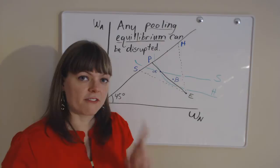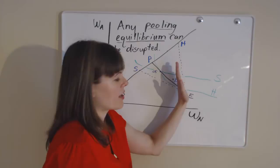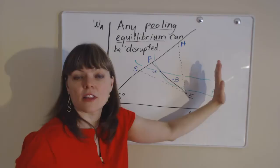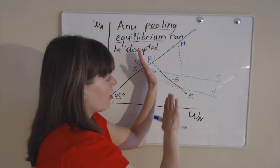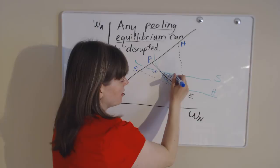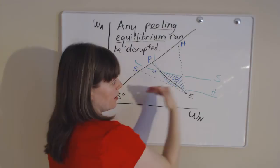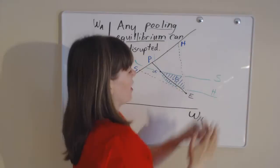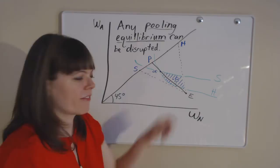The final thing we need to do here is shade the region where all potential cream skimming packages could be located. Cream skimming packages cannot be to the right of that relevant actuarially fair line. They also need to not attract the sick, so we need to have it downhill on the sick person's utility mountain. They also need to attract the healthy, so they need to be uphill on the healthy person's utility mountain. This is the region that meets all three criteria. It makes a positive profit for the insurance company, it's not going to attract the sick, and it is going to attract the healthy.